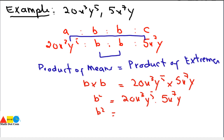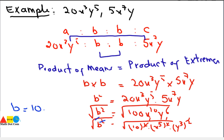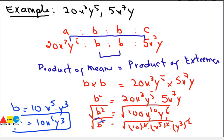So B squared equals 20X³Y⁵ · 5X⁷Y, which becomes B squared equals 100X¹⁰Y⁶. Taking the square root on both sides: 100 can be written as 10 squared, X¹⁰ can be written as (X⁵)², and Y⁶ can be written as (Y³)². Cancelling the square with the square root gives B equals 10X⁵Y³. So B is 10X⁵Y³, which is the mean proportional of 20X³Y⁵ and 5X⁷Y. This is how you find the mean proportional by writing in standard form and solving as in proportions.